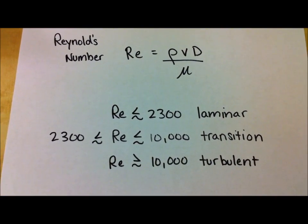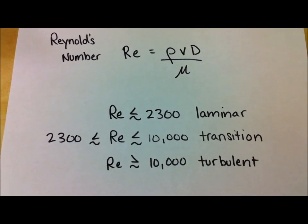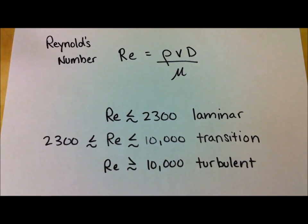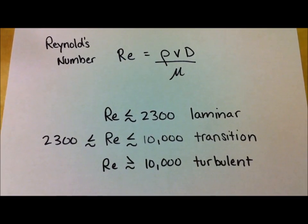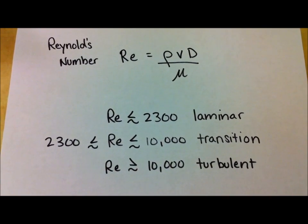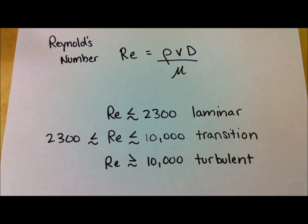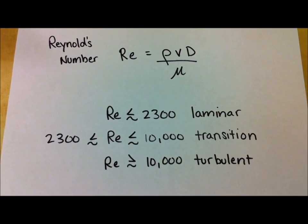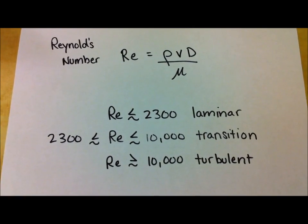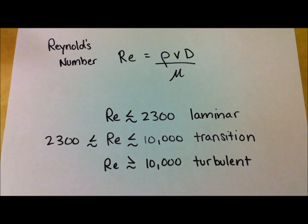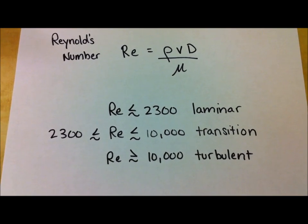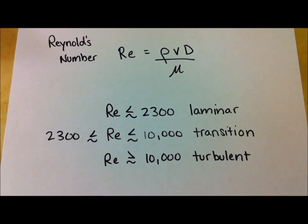Now going back to our Reynolds number equation — basically what happened is the diameter of the pipe remained the same, that never changed. The dynamic viscosity of water never changed, and the density of water never changed. But the thing we did change was the velocity of the water, and as the velocity increased, we went from laminar into turbulent flow. And so there you go — that's an example of laminar versus turbulent flow. Thank you.